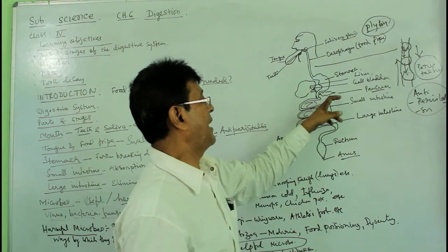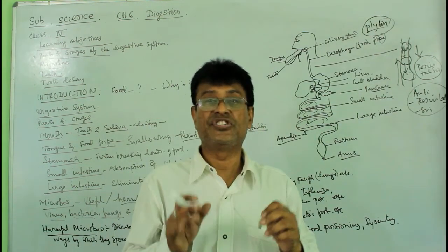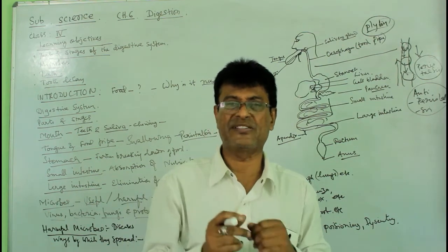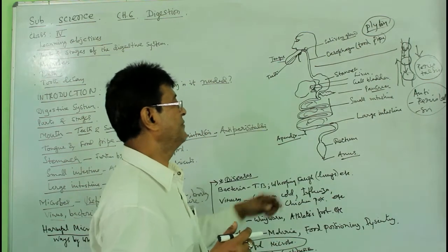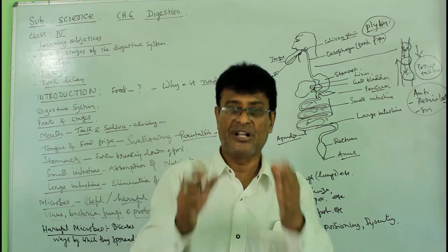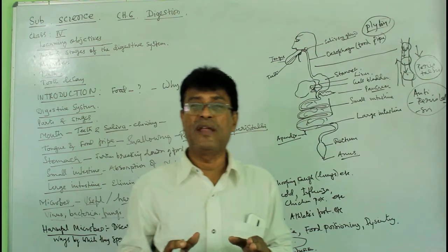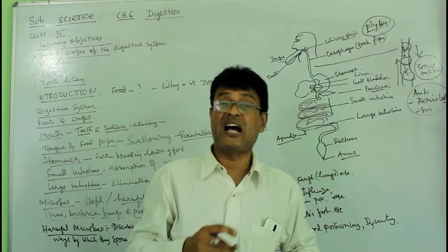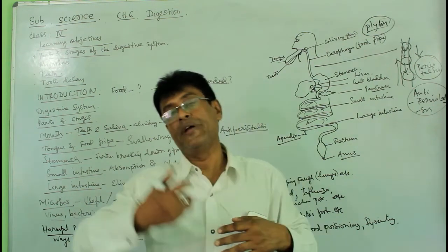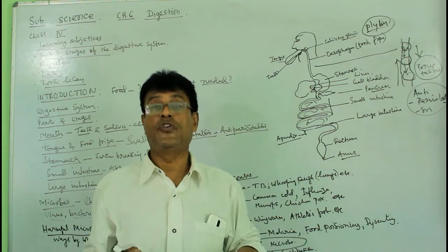There is also a green-chili-shaped organ called the pancreas, which produces various enzymes — pancreatic juice — that help in the digestion of proteins, carbohydrates, and many other things, simplifying them further. From there, food enters the small intestine, which has parts including the ileum, duodenum, and jejunum, where different stages of digestion occur.